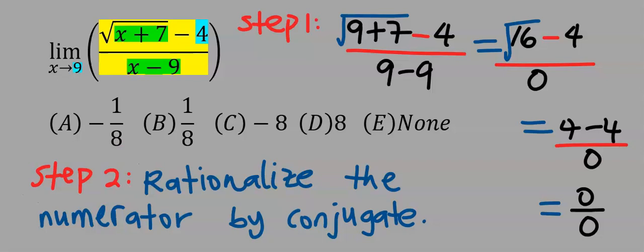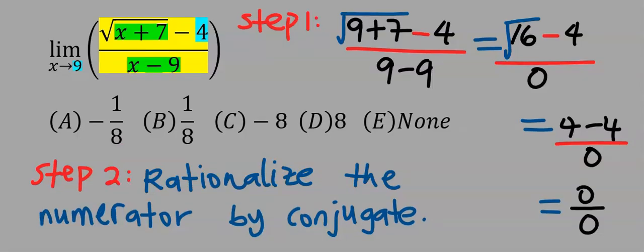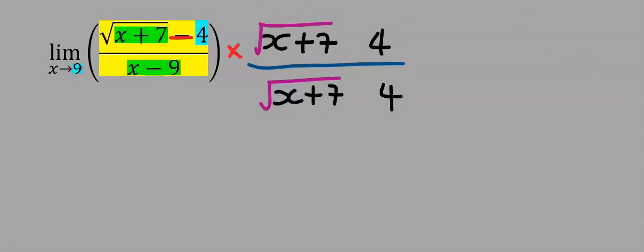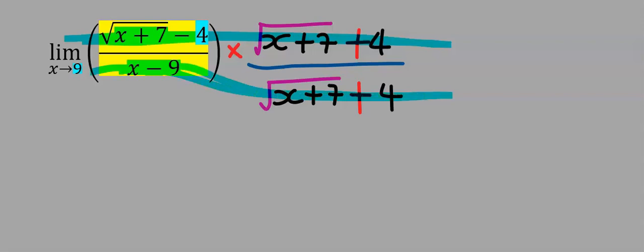Step number 2: rationalize the numerator by conjugate. We multiply both the numerator and the denominator by everything at the numerator. However, we change the arithmetic operator sign that separates them — instead of minus, we use plus for the conjugate. Remember, everything at the top will be multiplying and everything at the denominator will also be multiplying.